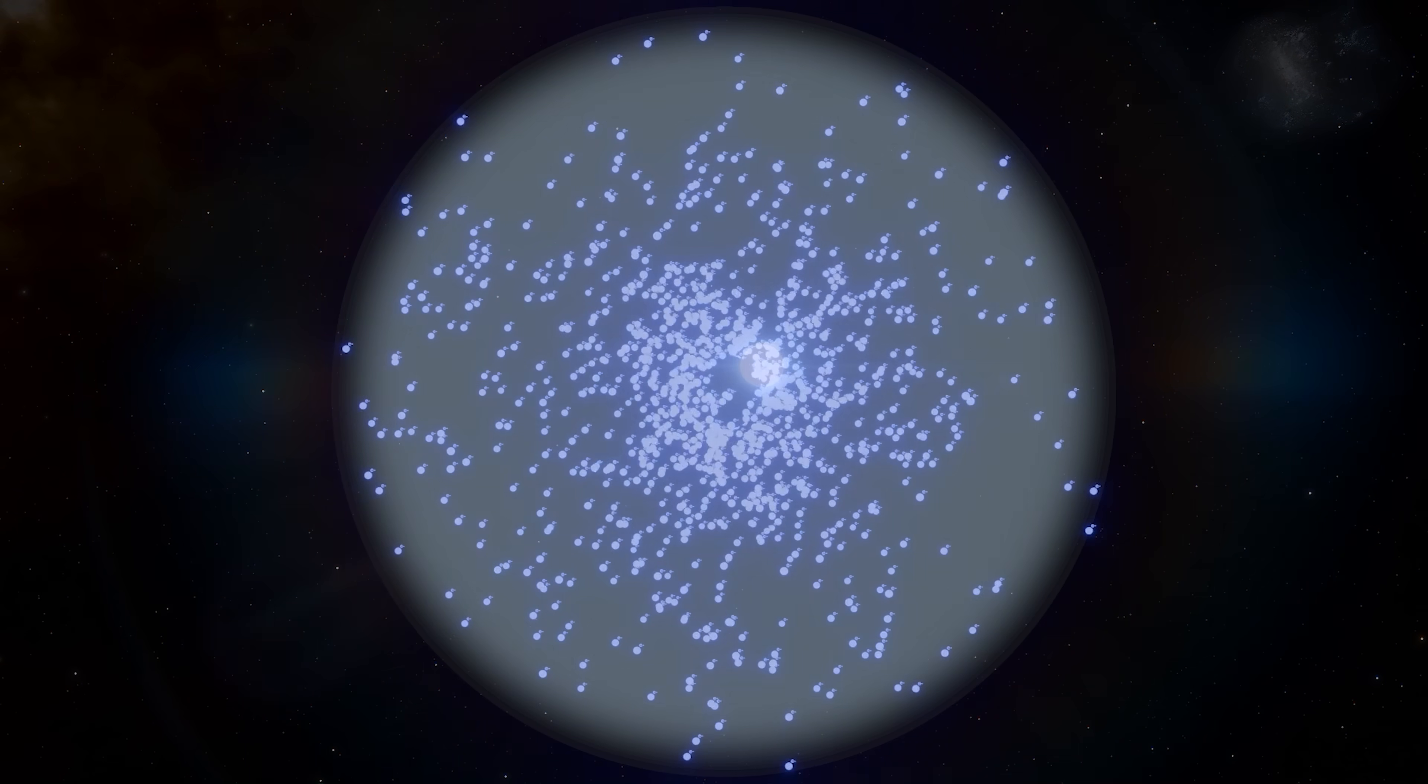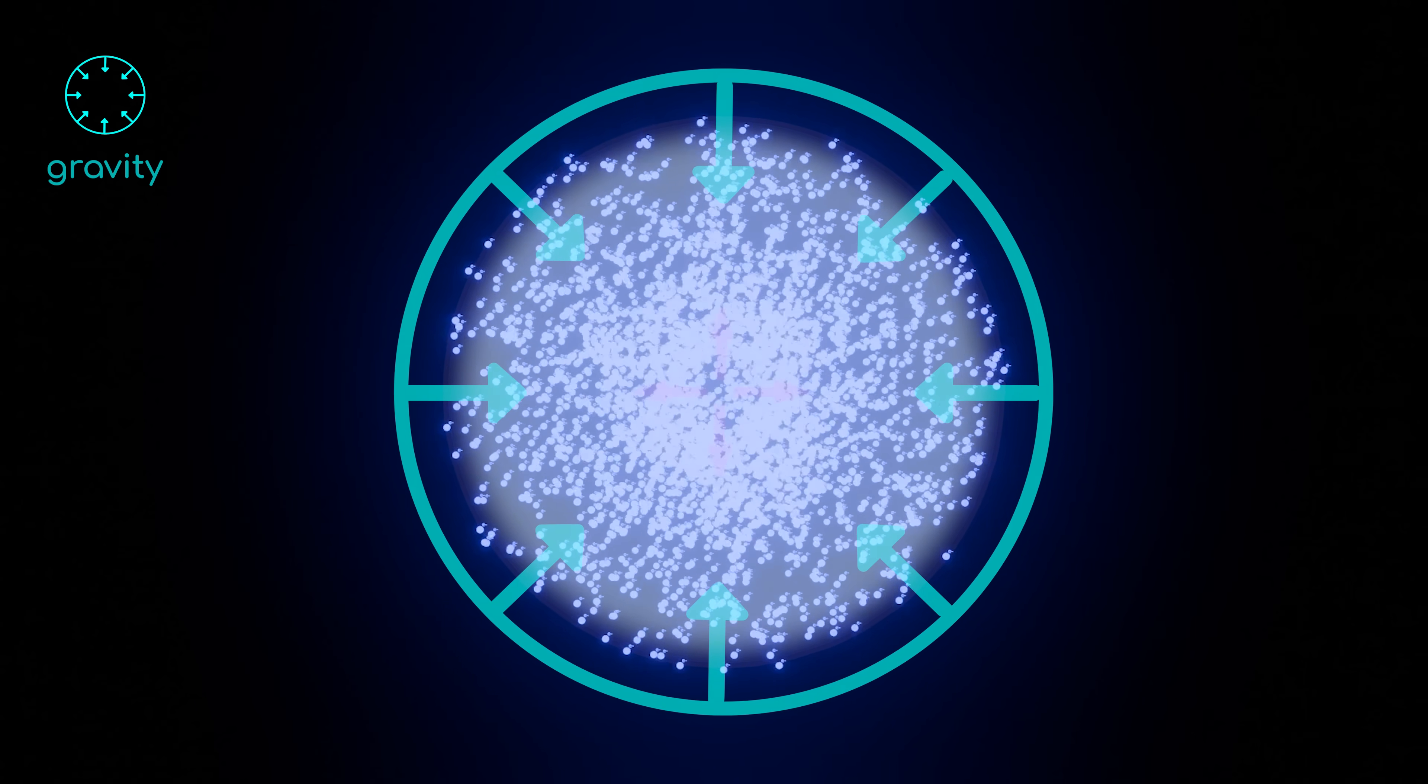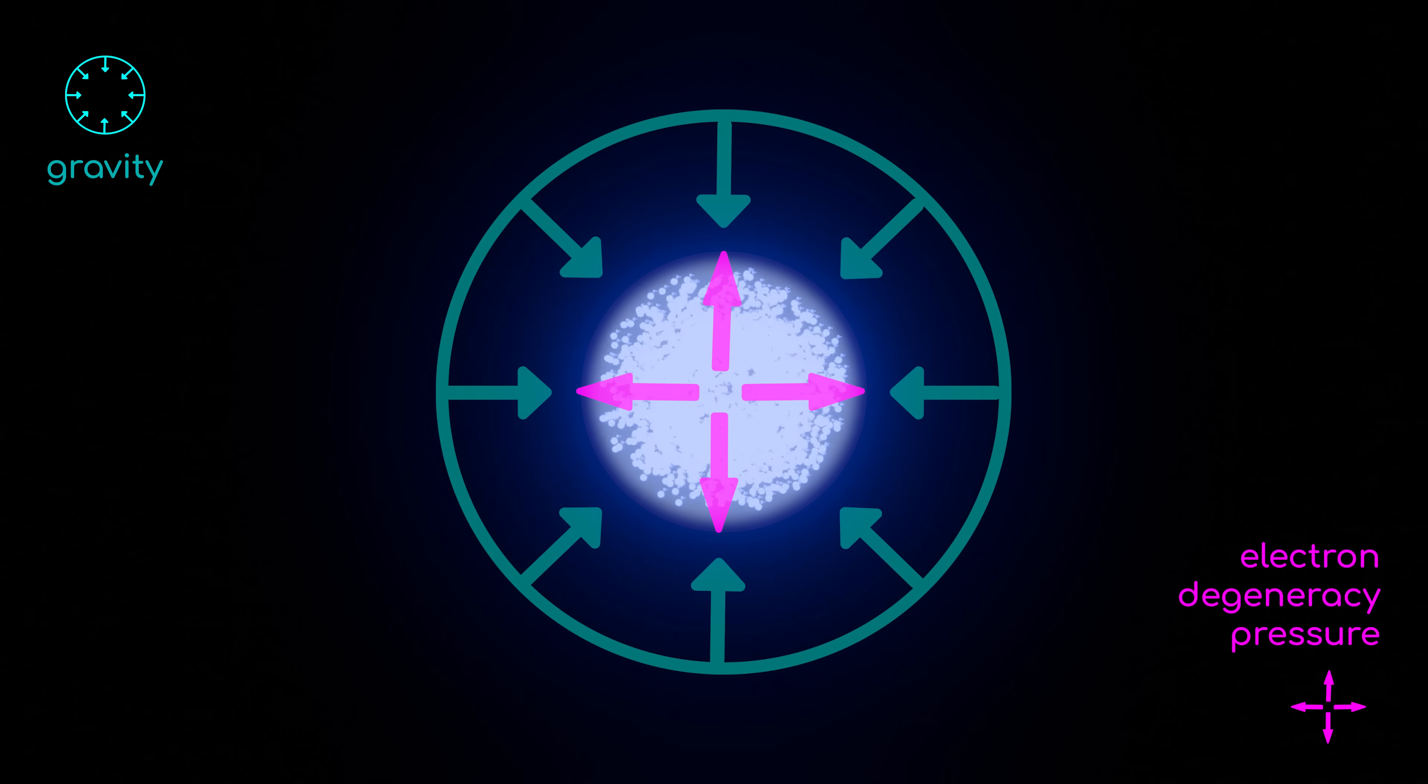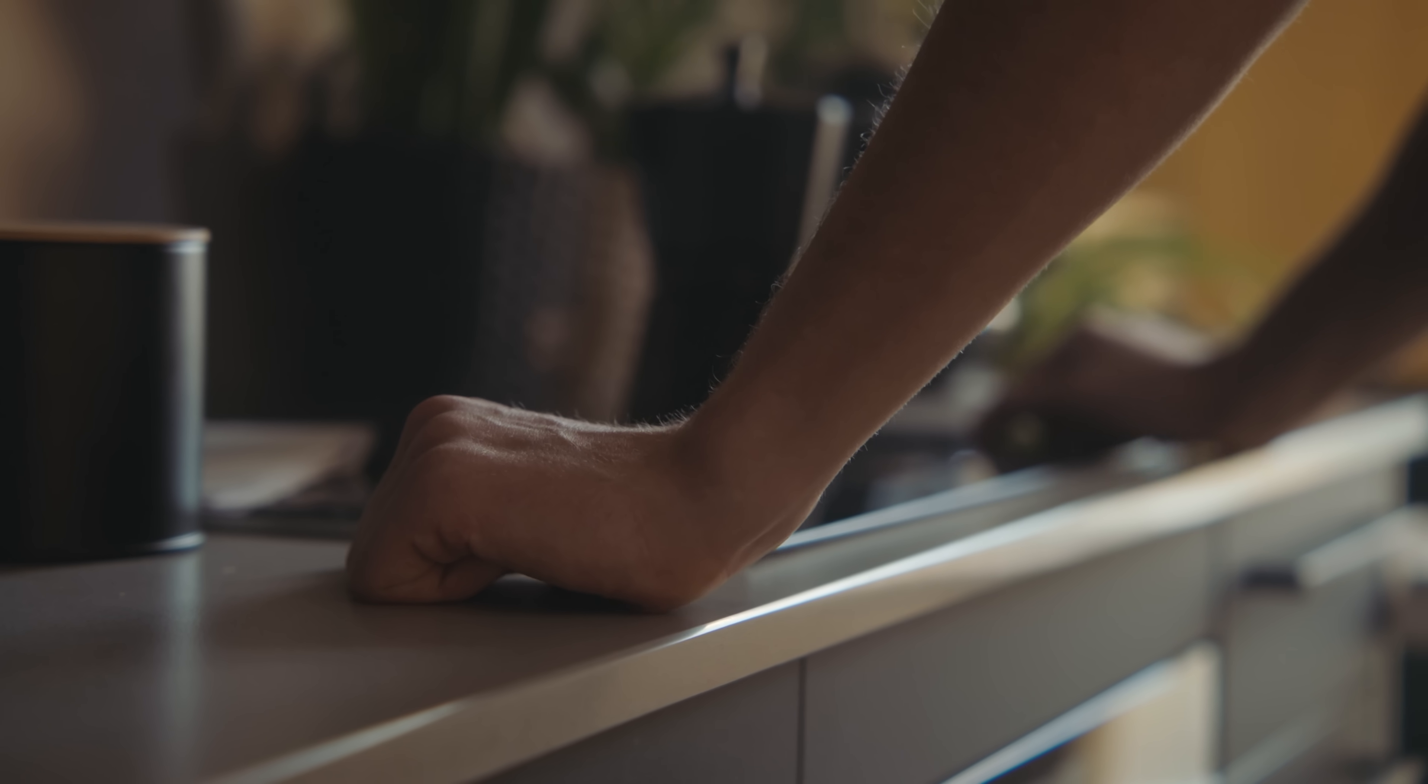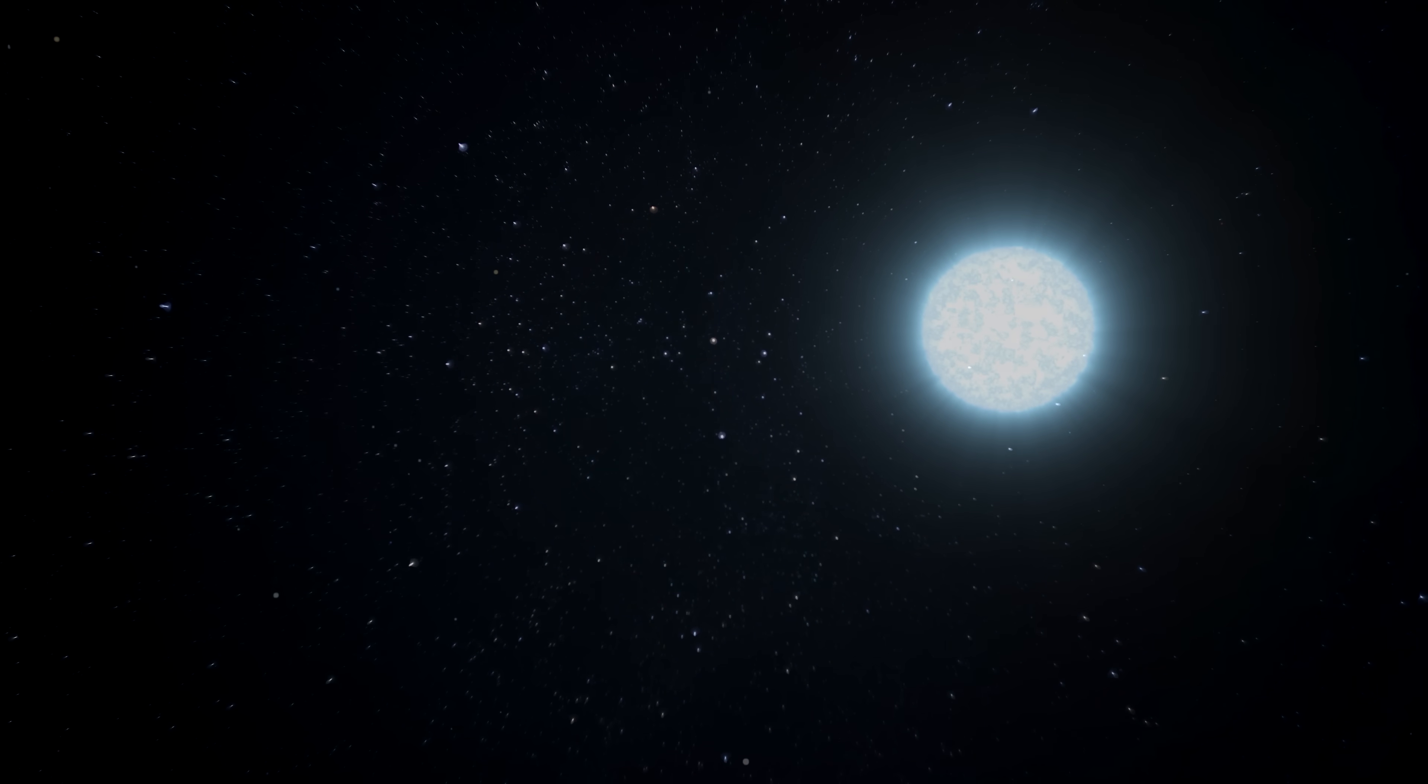It turns out that gravity pulls the gas of a white dwarf inward until it's so dense that a new type of pressure emerges, known as electron degeneracy pressure. This is a purely quantum mechanical effect, and it's the same effect that's responsible for you not being able to pass your hand through solid objects. Electrons simply cannot get too close to each other without an extraordinary amount of energy.